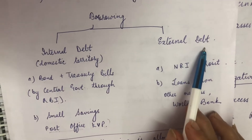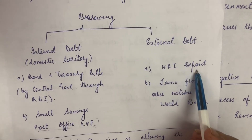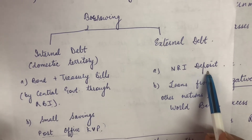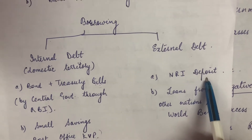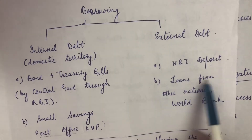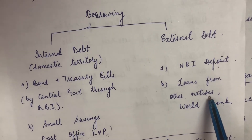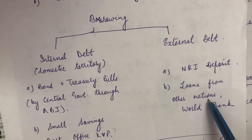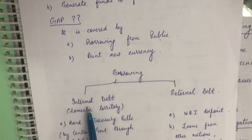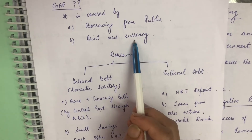Now we come to external debt. The government also borrows outside the territories of India. First is NRI deposits — people settled abroad also provide deposits to the government for a certain period of time. They earn interest, and people find it attractive as it's government-backed. In return, the government gets money through NRI deposits. Secondly, loans from other nations — loans can also be taken from the World Bank and from individual nations. For example, India took a loan from Japan for the bullet train. All these come under external debt. So borrowing from the public covers both internal and external debt, and the other method is printing new currency.